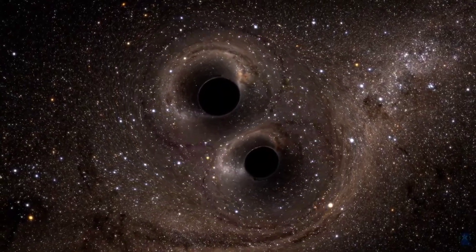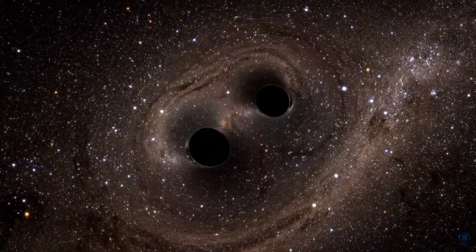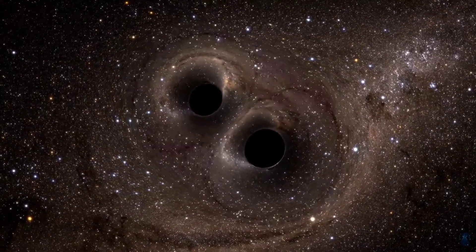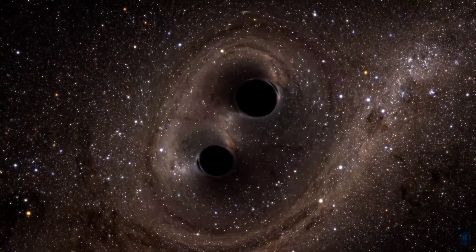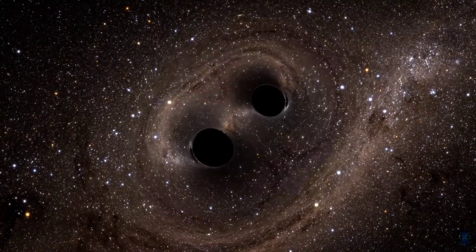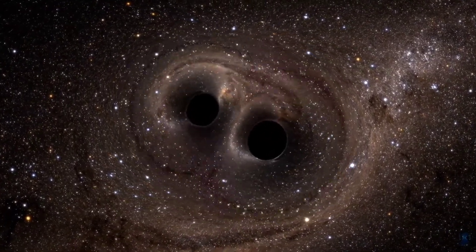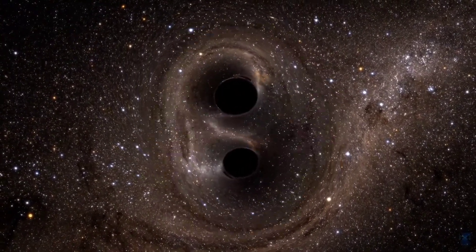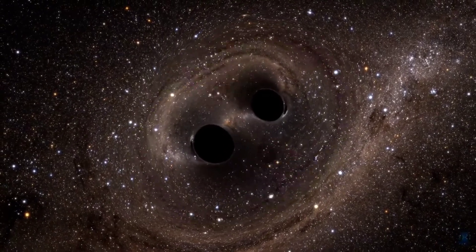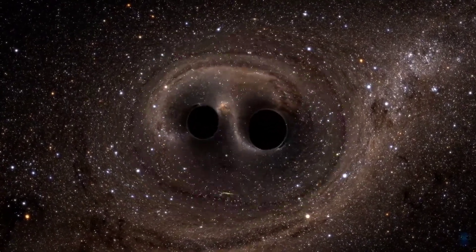Today, gravitational wave detectors can measure the merging of neutron stars and two black holes. Currently, we have detected 23 gravitational waves: 20 from merging black holes, 2 from merging neutron stars, and 1 is suspected to be the first known merger between a black hole and a neutron star.